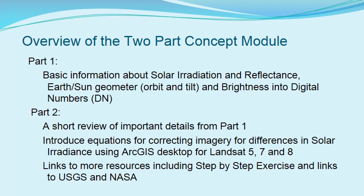Part one contained basic information about solar irradiance and reflectance. It included concepts about Earth-Sun geometry, its orbit and tilt, and talked about brightness and digital numbers. Part two will have a short review of the more important details, but it will introduce equations for correcting imagery for differences in solar irradiance energy.